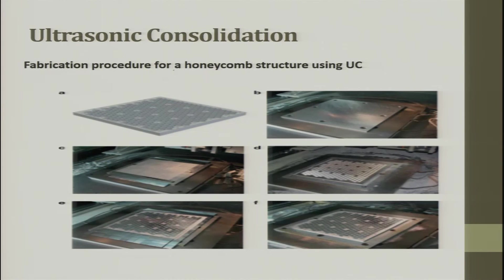An example is the fabrication procedure for a honeycomb structure using UC: you keep adding layers, one layer placed here, then the honeycomb structure is formed, then subsequent layers E and F are added. Ultrasonification and consolidation happen at each stage, producing the final layered structure.